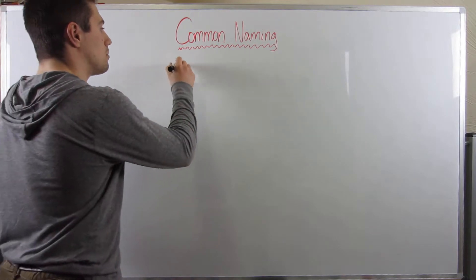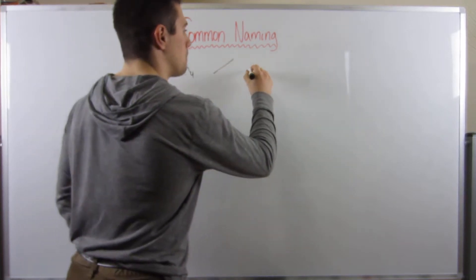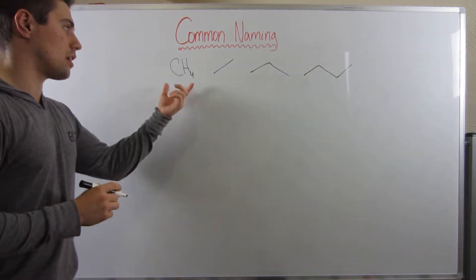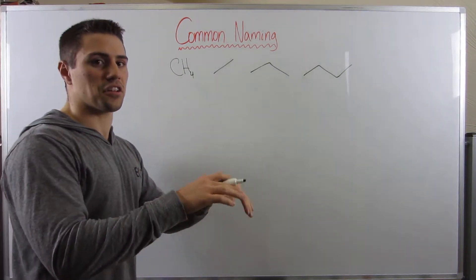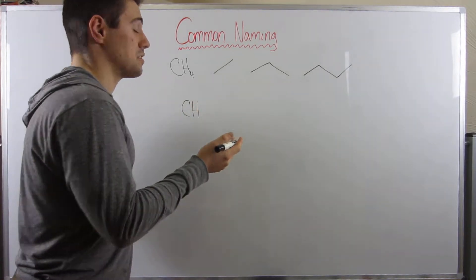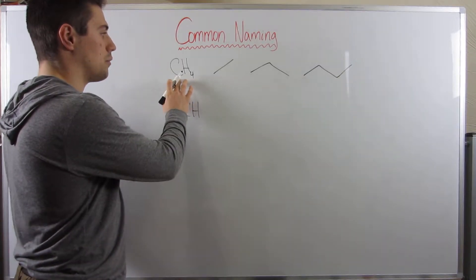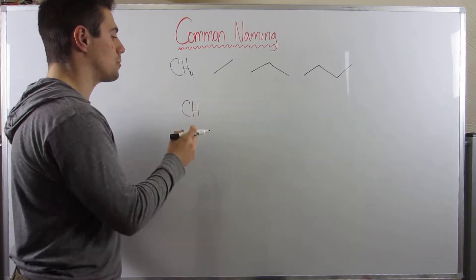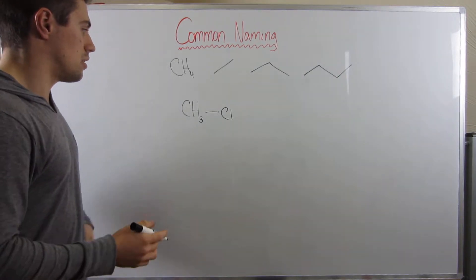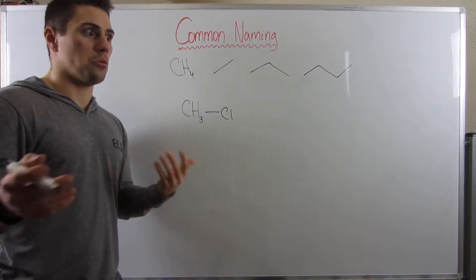Common naming applies to smaller molecules, or molecules that come up a lot, where there are easy ways to name them as opposed to jumping through all the hoops of systematic naming. The carbon chains we're going to handle are methane, ethane, propane, and butane. Let's start with methane. Common naming is applicable when you have something attached to a carbon chain — for example, CH3 and a chlorine attached to this carbon.